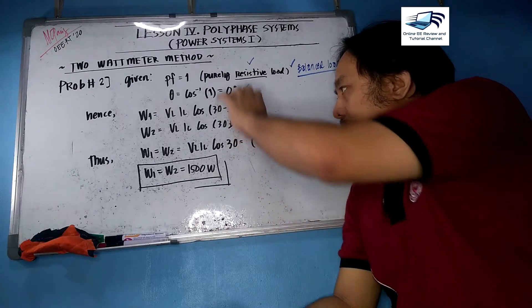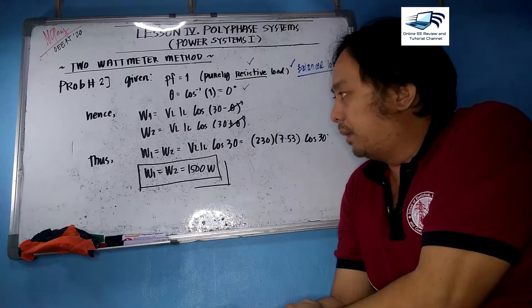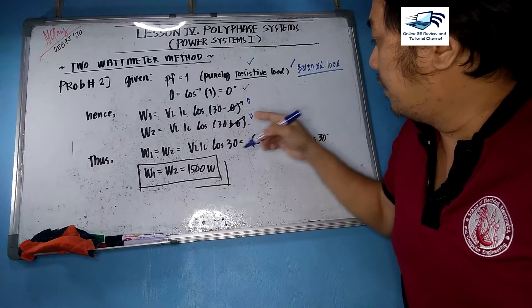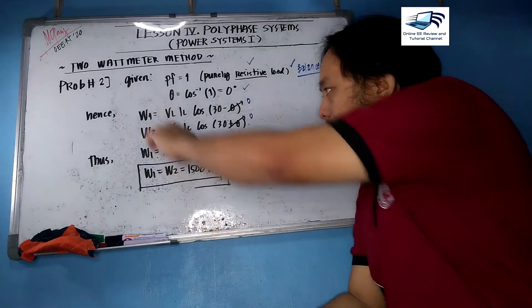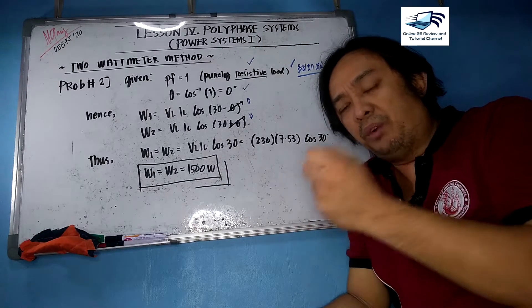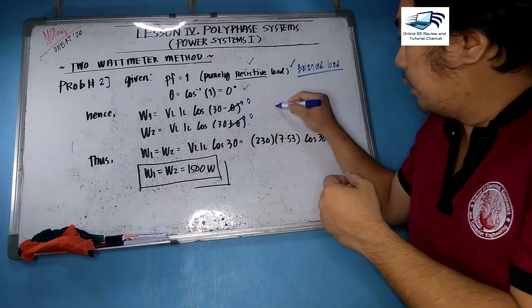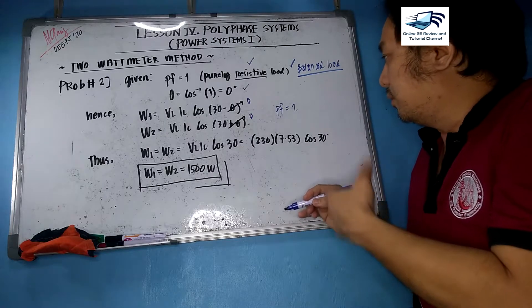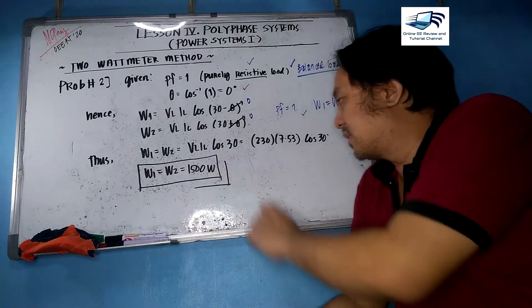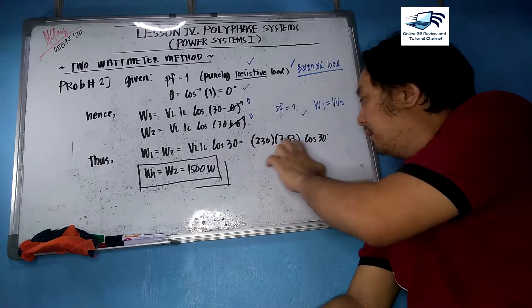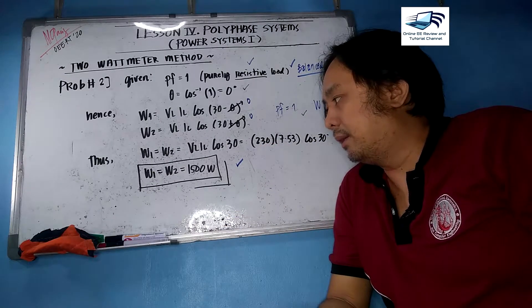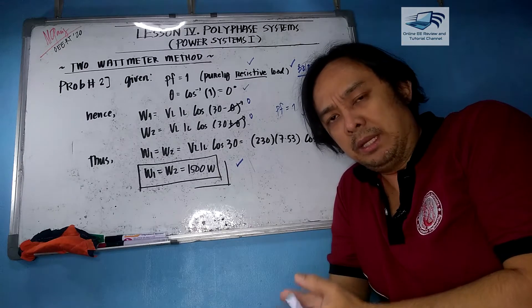Recalling the equations W1 = VL × IL × cos(30° − θ) and W2 = VL × IL × cos(30° + θ), with θ = 0°, both formulas reduce to VL × IL × cos 30°, meaning W1 = W2. This also correlates with the power factor indicator rule that when PF = 1, W1 equals W2. Substituting: W1 = W2 = 230 × 7.53 × cos 30° = 1500 watts.